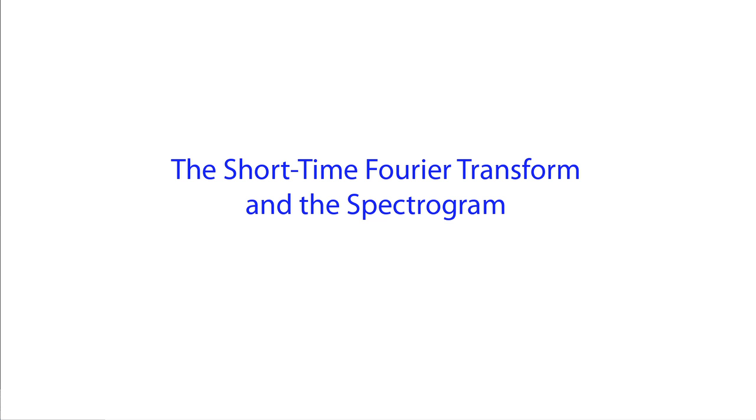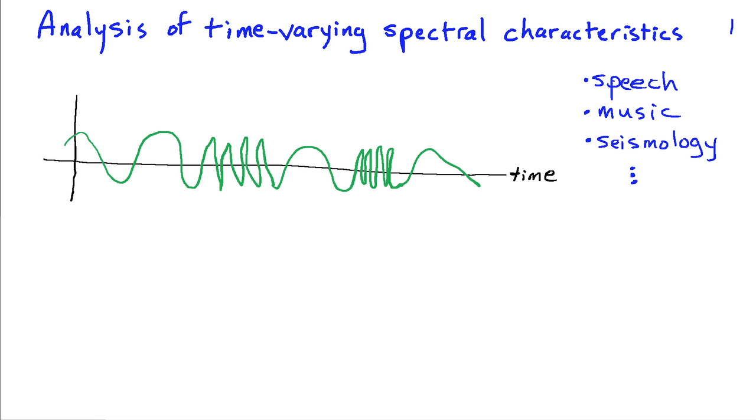The short-time Fourier transform and the spectrogram are used to analyze the frequency content of signals when that frequency content varies with time. Let's suppose I have a signal as illustrated here, and you can see that the frequency content of this signal is varying with time. In this initial interval here it's relatively low frequency, and then here it's a higher frequency, and then it drops to low again and then higher even yet and then low.